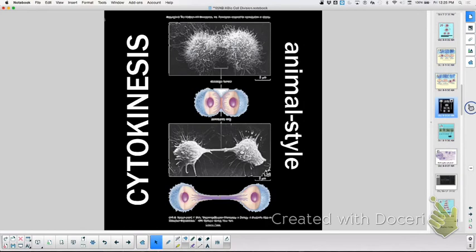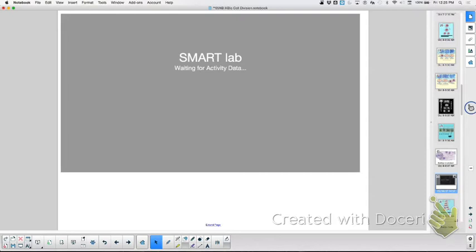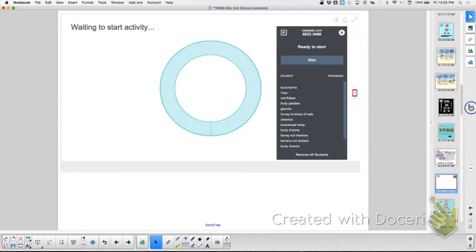Now, cytokinesis is different whether or not you're a plant or an animal. Because animals, they can have a what furrow? Cleavage furrow. Whereas plants have to build a? It's a wall. Exactly. So here we can see that. Here we go. A few questions. Afterwards, you can log in and take these questions too. Good review for you.